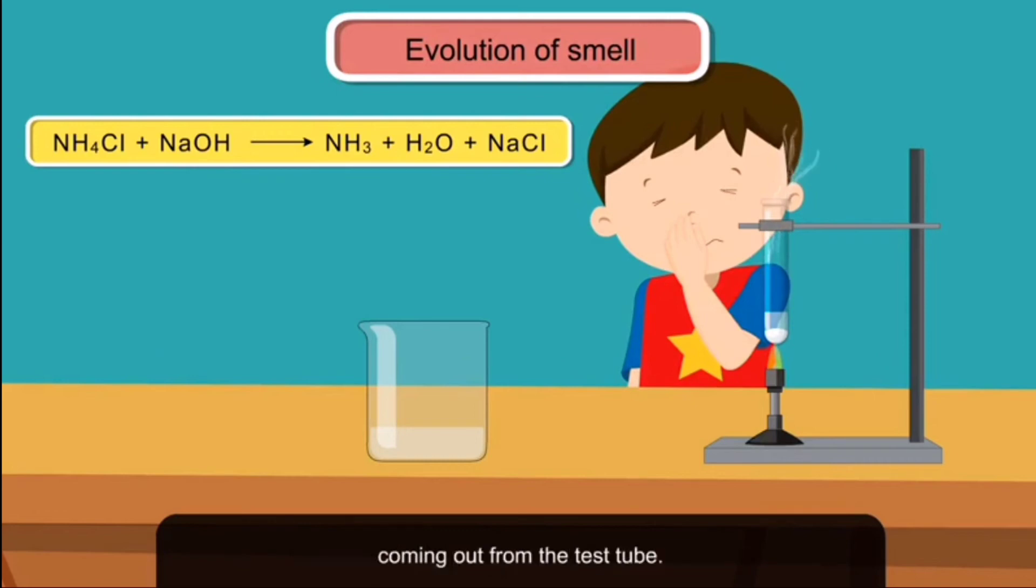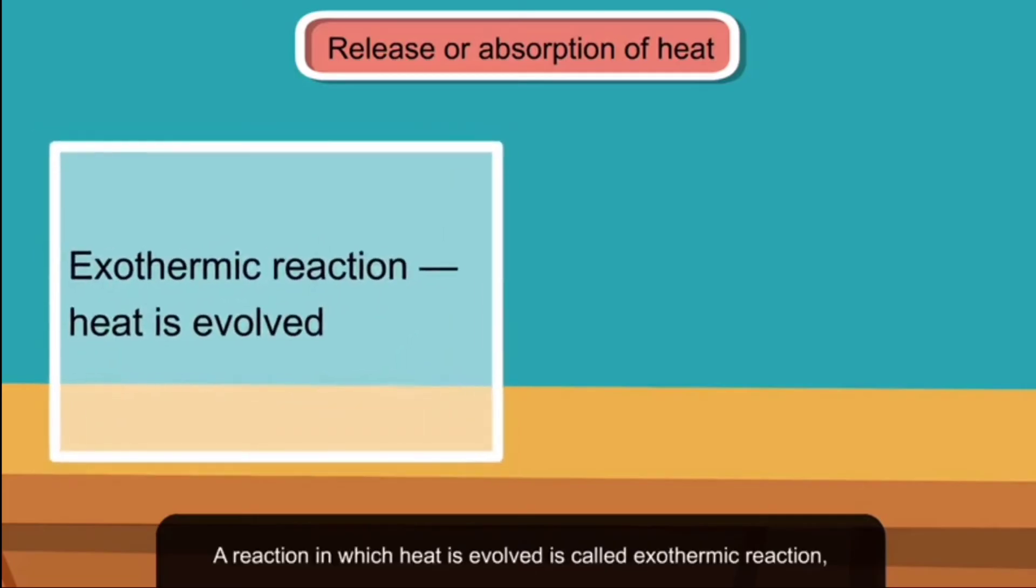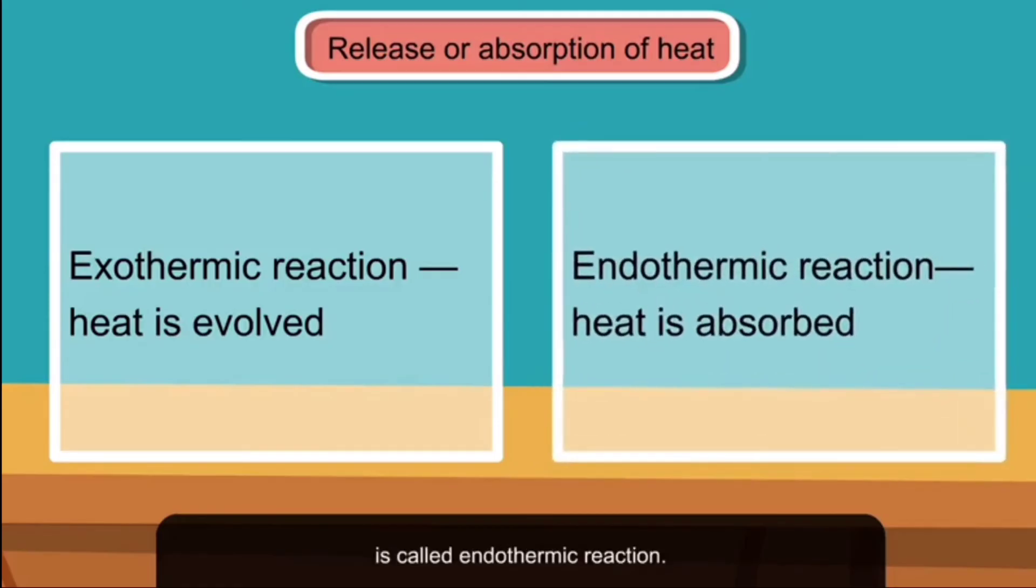Release or absorption of heat: In many chemical reactions, there is either an absorption or evolution of heat. A reaction in which heat is evolved is called exothermic reaction, and a reaction in which heat is absorbed is called endothermic reaction.